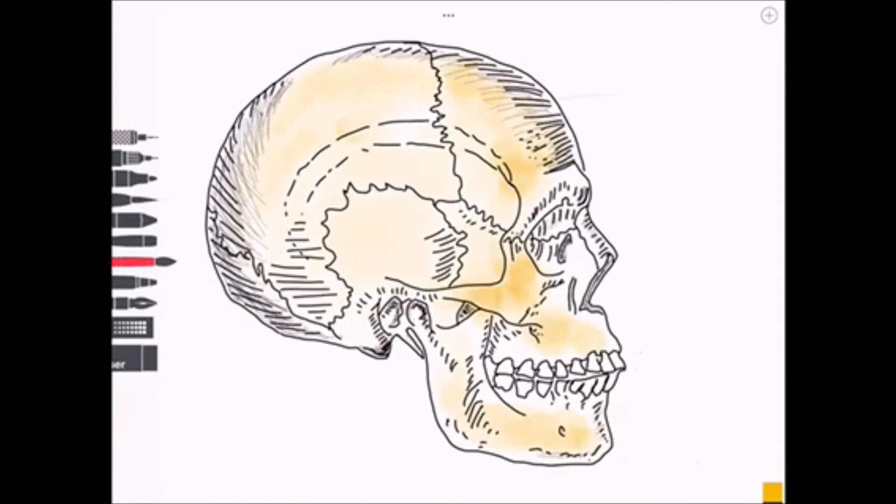We're going to start off by labeling the frontal bone which forms the roof of the orbit. We have paired nasal bones which contribute to the bridge of the nose. Forming the cheekbone we have the maxilla which also houses the upper teeth. Completing the cheekbone we have the zygomatic bone.